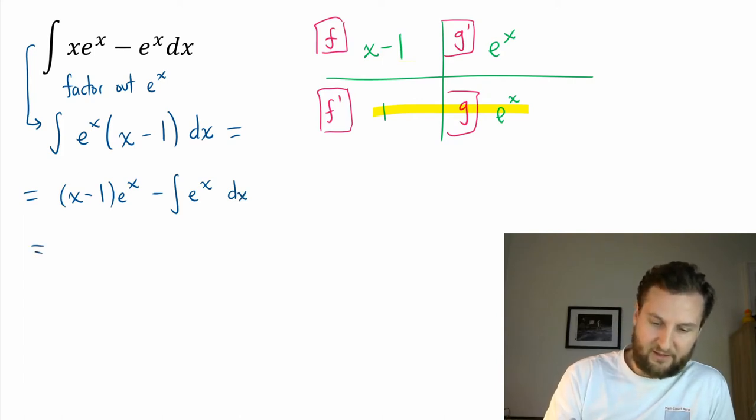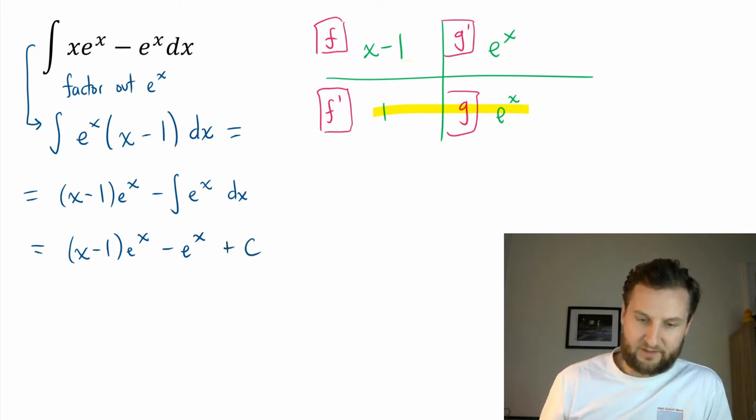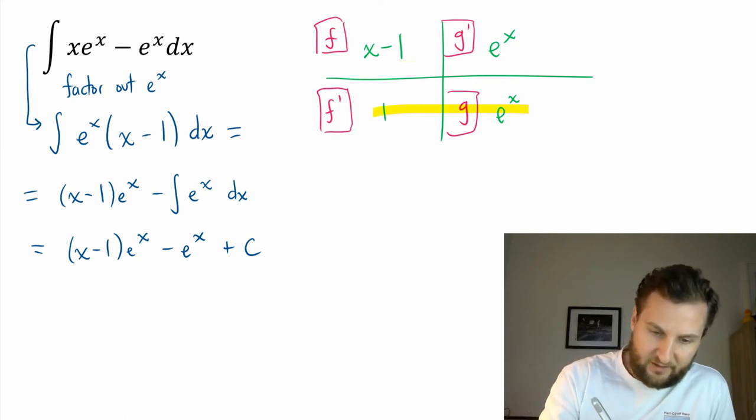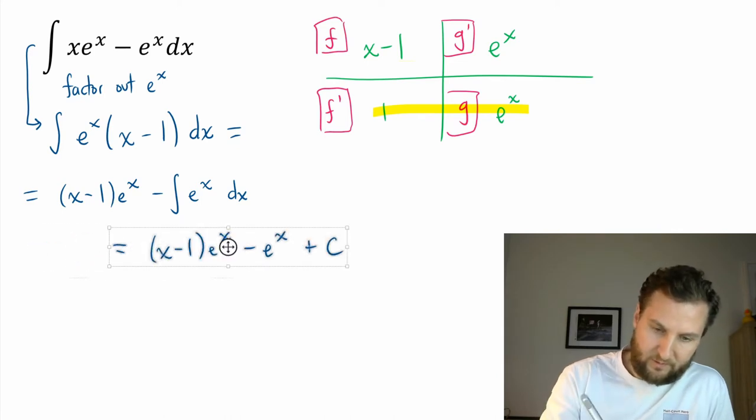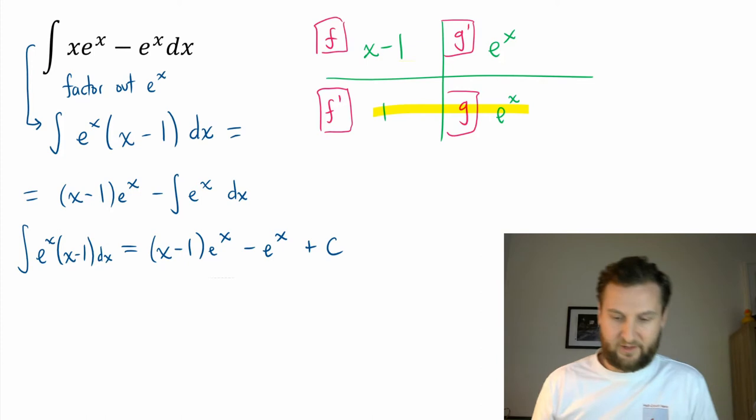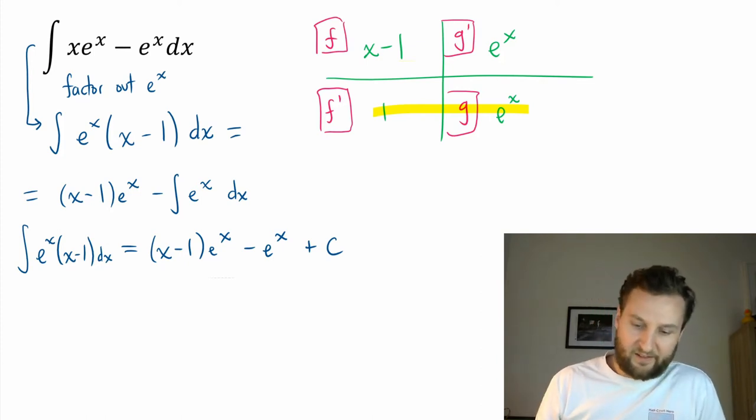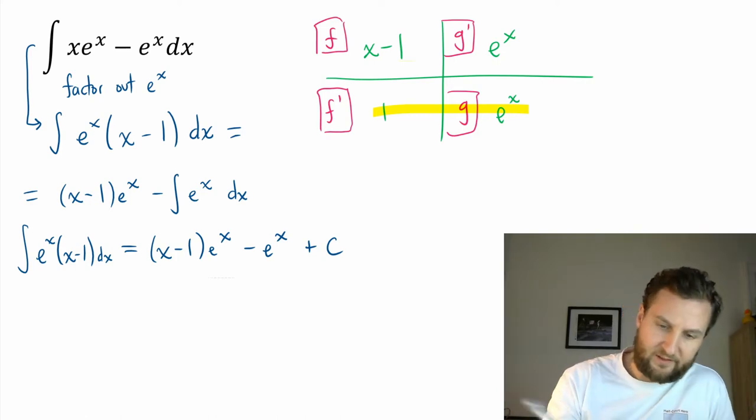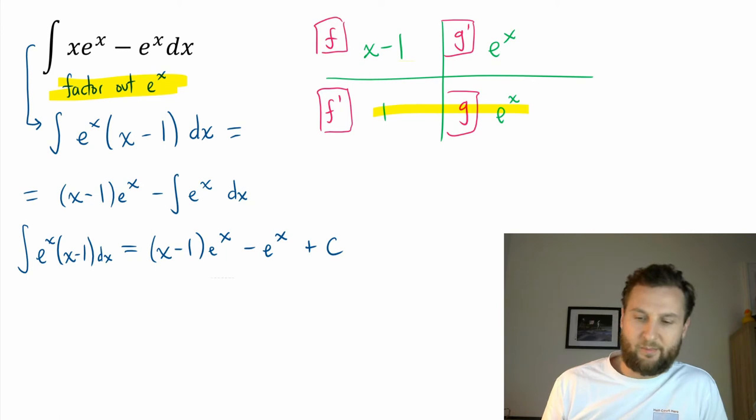So I can now say that this, without doing any simplification, is minus e^x plus c. Let's just rearrange this, or reformat, so e^x(x - 1). Okay, so here is the full line, and you may want to expand and factor that, but that's not necessary at this stage. So that's just showing how we can factor out a term and then use integration by parts.